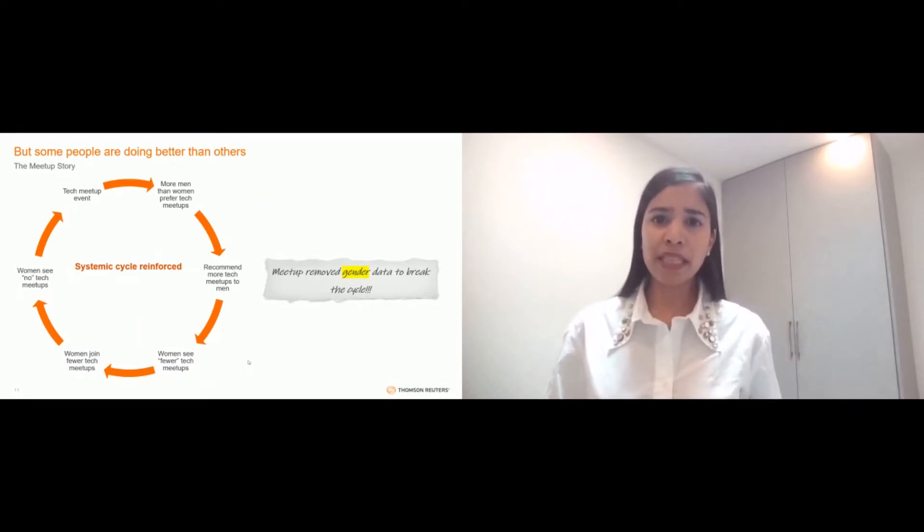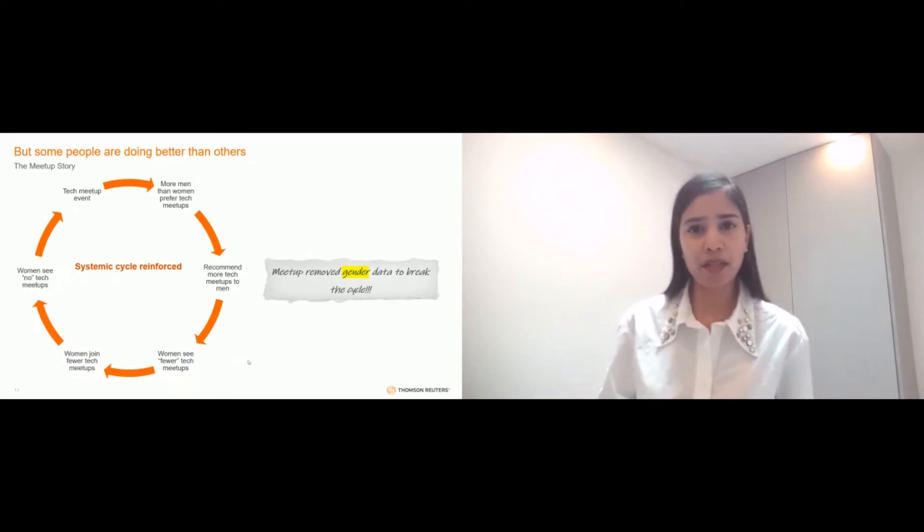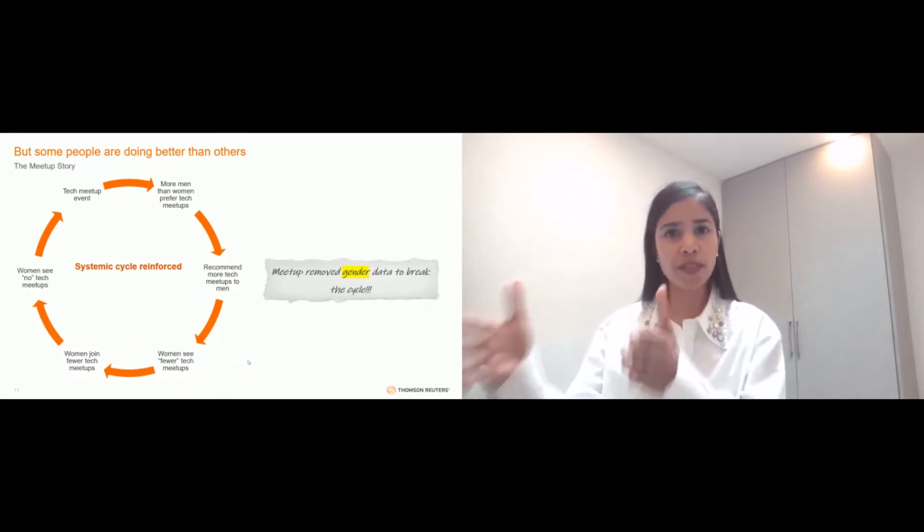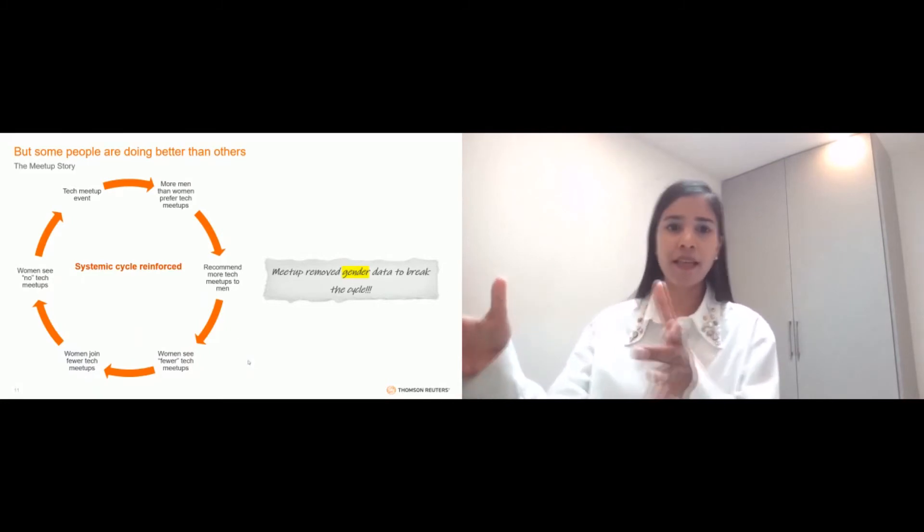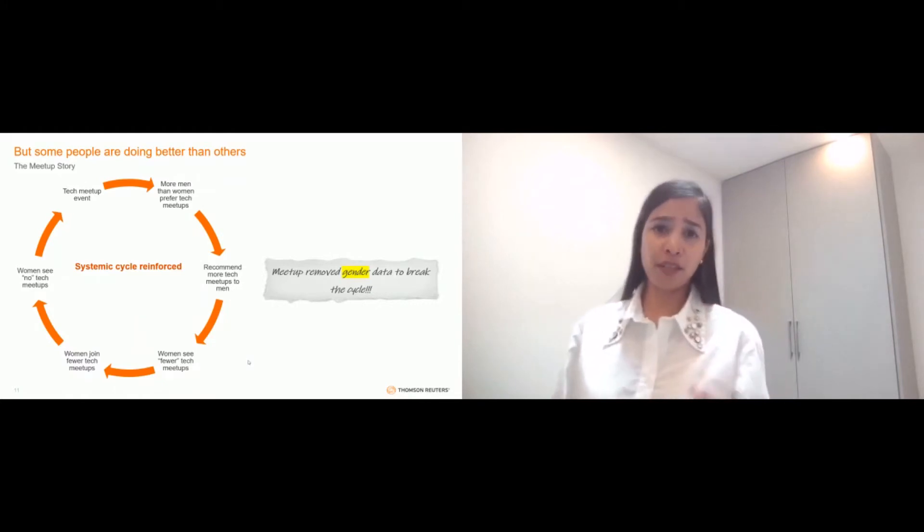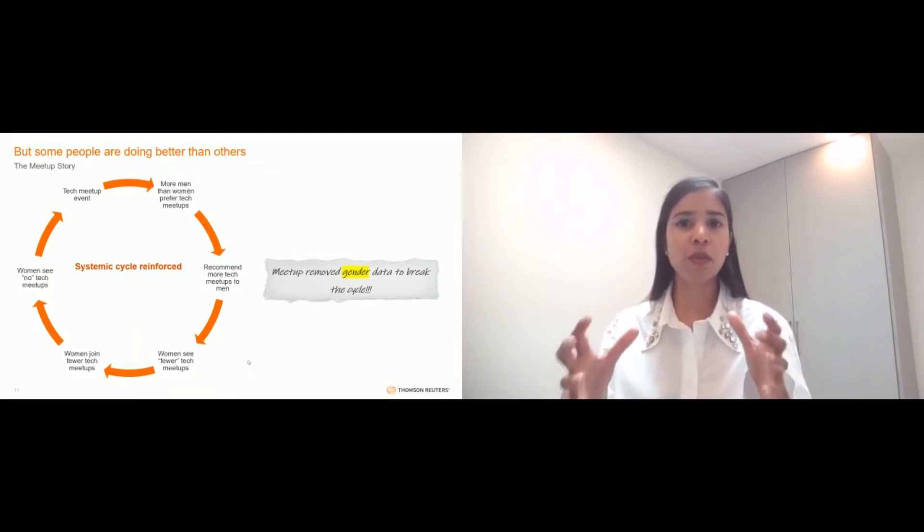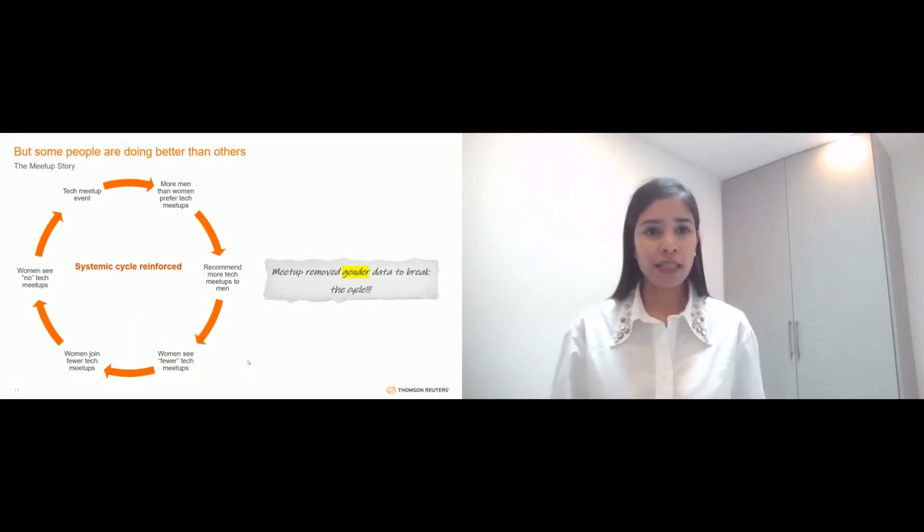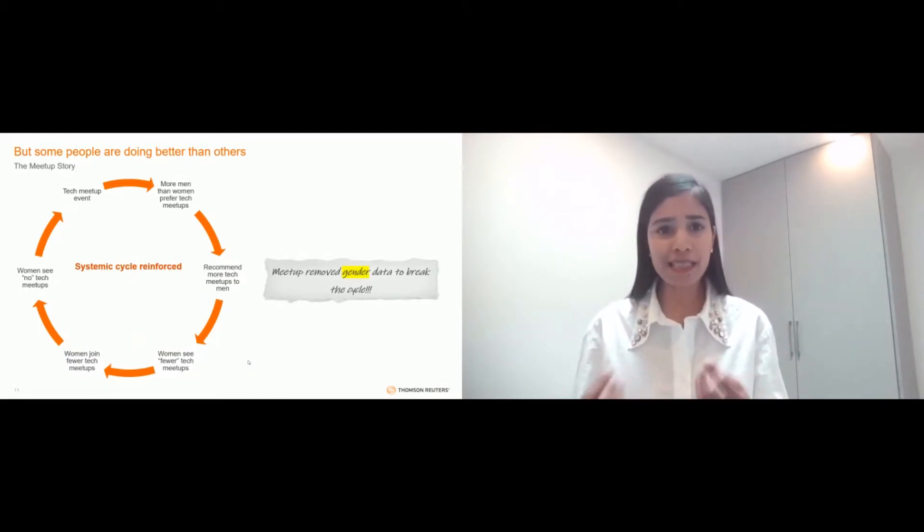So Evan and his team made the ethical decision to remove gender from that part of their model. And in so doing, they broke the cycle of the recommendation engine and prevented the systemic imbalance from reinforcing itself. We can take a leaf out of Evan's book, we can learn from his example, and we can be very cautious about the design decisions we make, and how we choose what features we will include and what features we will leave out. And we can very carefully monitor our algorithms to ensure that there are no unintended side effects, edge cases that we did not predict, and unintended consequences from our work that we did not foresee, and we would not want our names associated with.